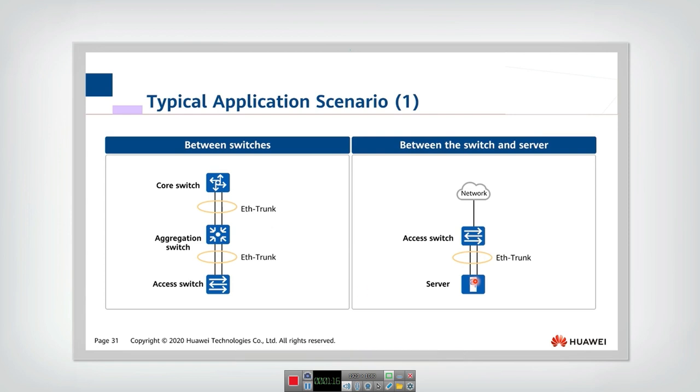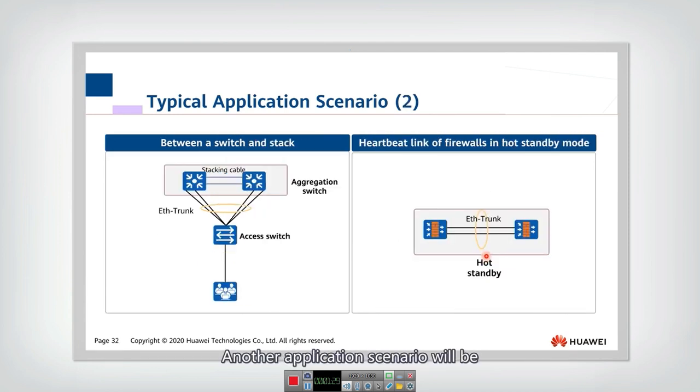In the Ether trunk between the switches and between the switch and servers, the reliability can be improved. And at the meanwhile, the bandwidth can be increased by using multiple links and the loop can be prevented.